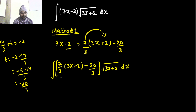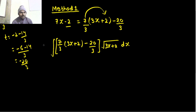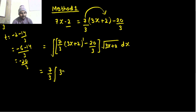Now the first term will be multiplied by this square root of (3x plus 2), and minus 20 by 3 will be multiplied by this square root of (3x plus 2). So let's write them separately. First you will have 7 by 3 times the integral of (3x plus 2) — here power is 1, here power is half. So when you multiply them, you will get (3x plus 2) power 1 plus 1 by 2, dx.